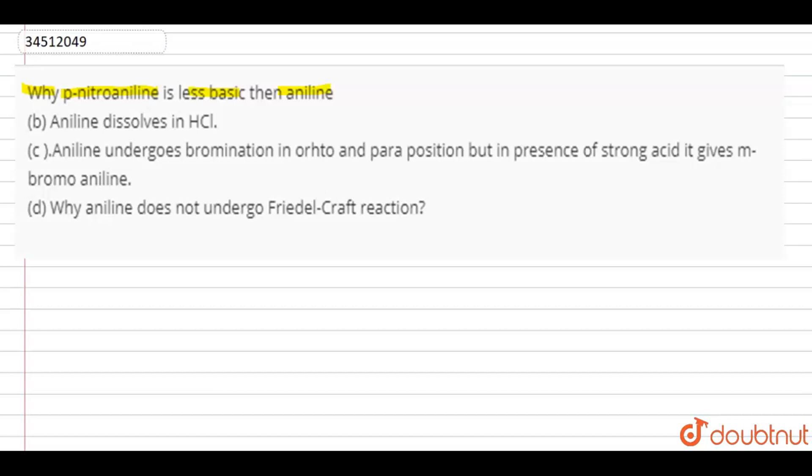In this question we should understand that in aniline the lone pair is in conjugation with the benzene ring, where the NH2 group is present.